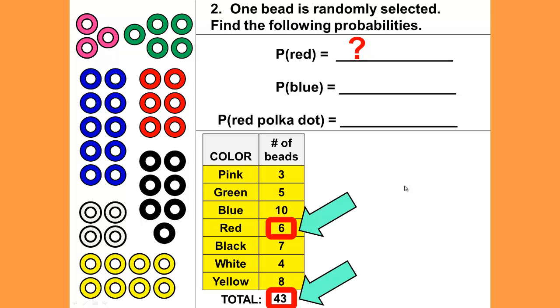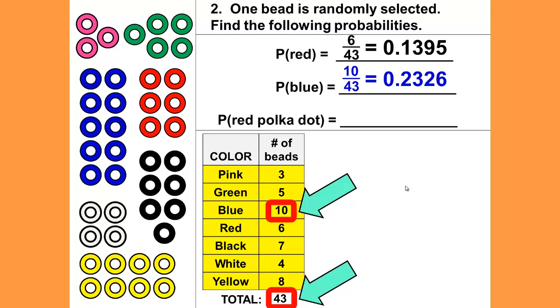We have six red out of the total of 43 beads, so the probability is 6 out of 43, which is 0.1395. The probability of being blue is 10 out of 43, or 0.2326.